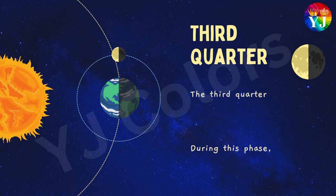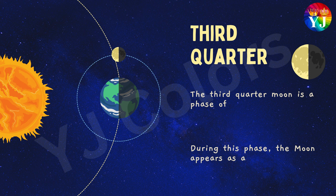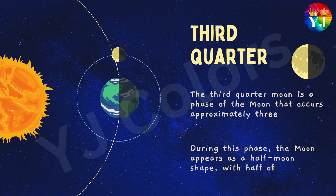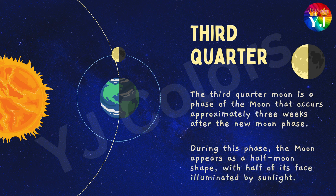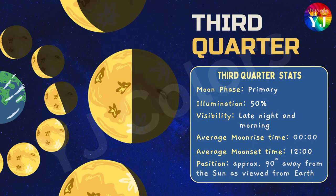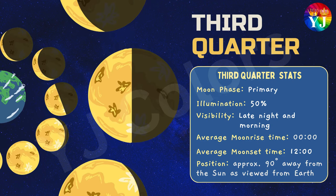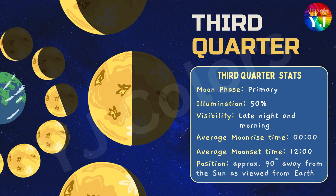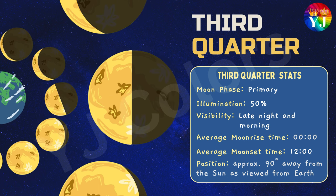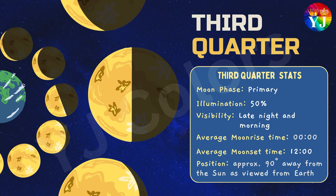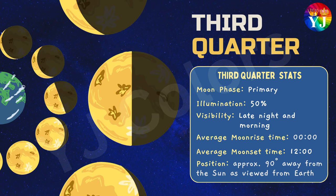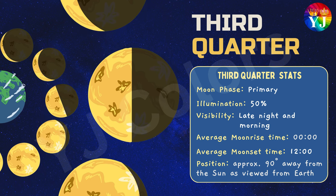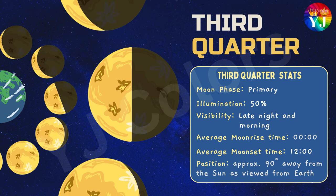Third Quarter: The third quarter moon is a phase of the Moon that occurs approximately three weeks after the new moon phase. During this phase, the Moon appears as a half-moon shape, with half of its face illuminated by sunlight. Statistics: Moon Phase — Primary; Illumination — 50%; Visibility — late night and morning; Average Moonrise and Moonset Time — 12 midnight to 12 noon; Position — approximately 90 degrees away from the Sun as viewed from Earth.